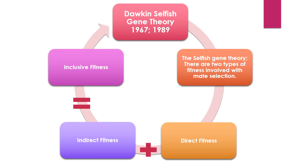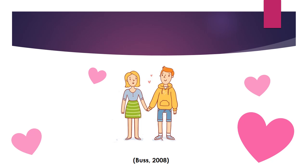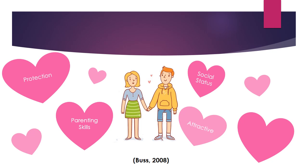Please pause the video to discuss what you think females look for in a male partner. These are some of the characteristics that Buss suggests females look for in a male partner: protection, parenting skills, social status, and attractiveness. We will go into more detail throughout the video; however, if you want to extend your revision further, you're welcome to look at the studies provided that support each aspect.